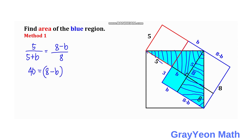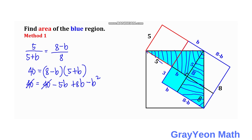By cross-multiplying we have 40 is equal to (8 minus b) times (5 plus b). So 40 is equal to 40, and for the inside terms we have negative 5b plus 8b minus b squared. We cancel the 40, simplify, and this becomes 3b minus b squared.